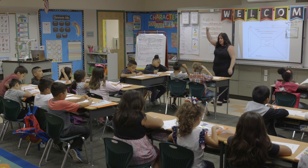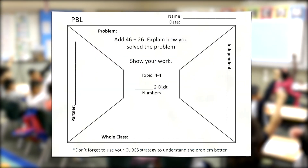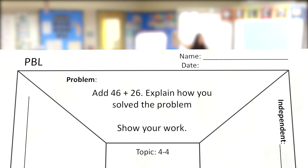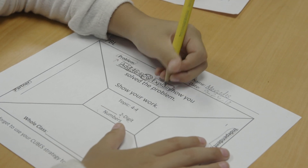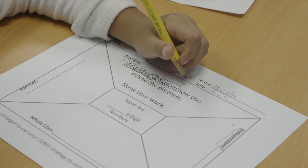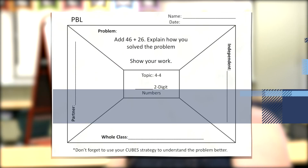We start with the first box, which is the problem box, and that's where I have the problem typed. I have that there so when we use the CUBES strategy they are able to write on the problem — they're doing all the steps, circling, boxing; you're able to see their annotations. After we break up the problem with CUBES we move to the independent box where now the students have an idea of what operation or how they're going to solve the problem.